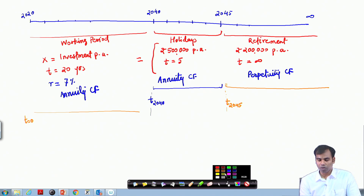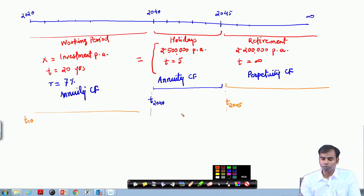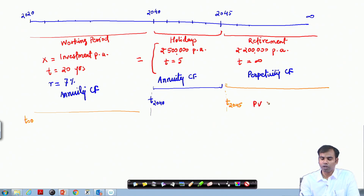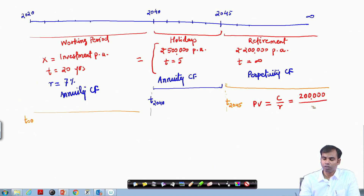Applying the formula for retirement: the present value of the perpetuity cash flow is C by R, which is 2 lakh rupees divided by 7 percent. This gives a value calculated at T2045.